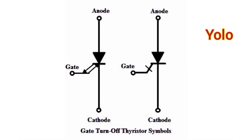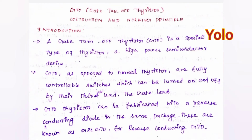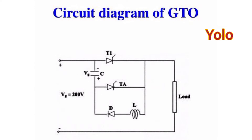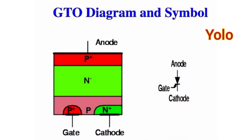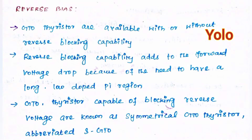The GTO thyristor can be turned on and off by the third lead — the gate lead. GTOs can be fabricated with a reverse conducting diode in the same package; these are known as RC-GTO, or Reverse Conducting GTO. These are the circuit diagram and symbol of GTO. Reverse-biased GTO thyristors are available with or without reverse blocking capability.